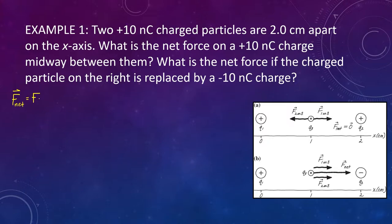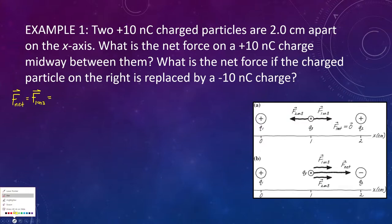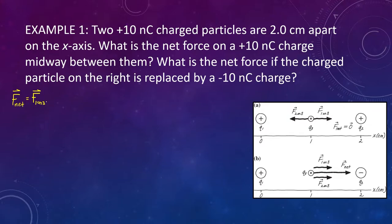We have the force F1 on 3, and we also have to include force F2 on 3, because they're both acting on that charge. They are both lying along the same dimension — the x-axis — so we don't have to worry about any trig to figure out components of the vectors. We just get to do a straightforward addition. The one thing we do have to worry about is the direction — the sign.